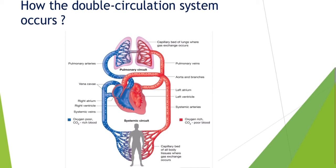Let's talk about the pulmonary circuit. Gas exchange has to occur, so the carbon dioxide-rich and oxygen-poor blood has to be transferred to the lungs. The gas exchange will occur there, and then that oxygenated blood comes back to the heart. Something has to pump out that deoxygenated blood — that is the ventricles, specifically the right ventricle.